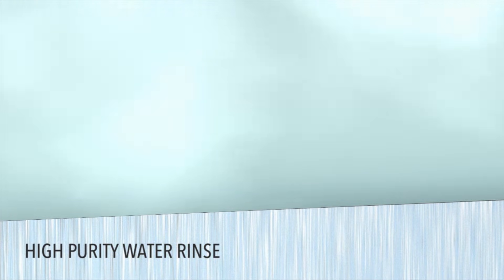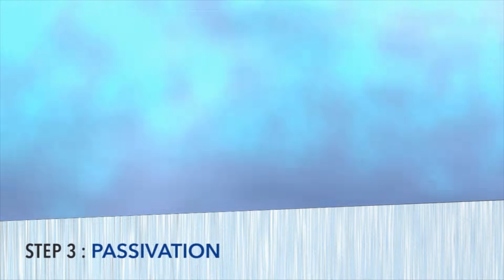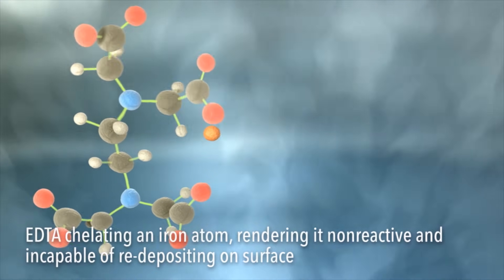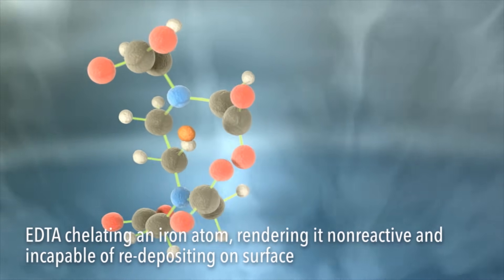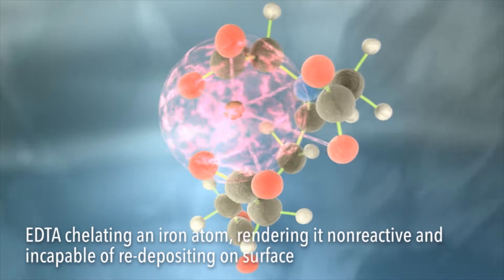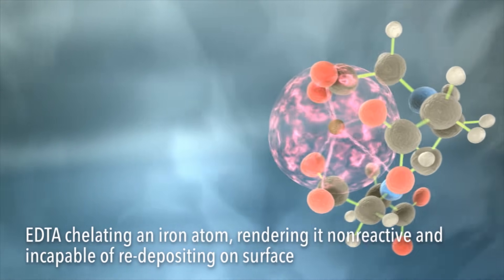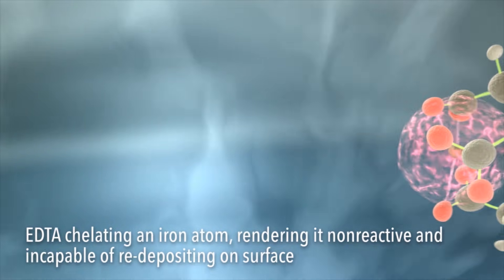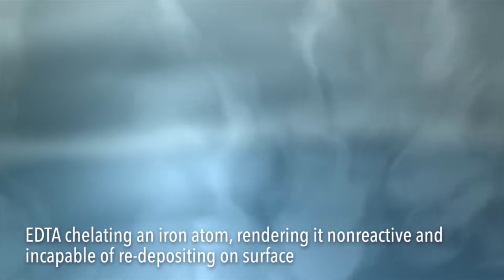Then we process the passivation fluids, which utilize chelants to chelate the minor amounts of iron and other metals that are on the surface, rendering that surface non-reactive and passivated.